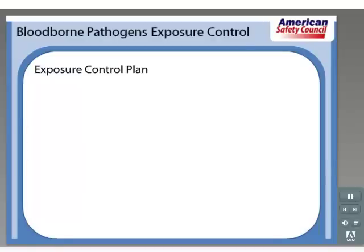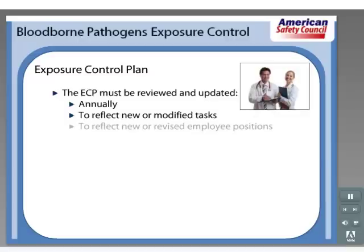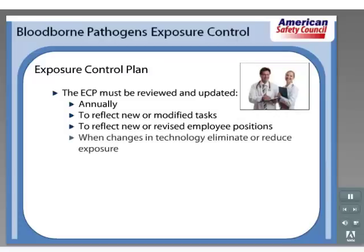The exposure control plan must be reviewed and updated at least annually and whenever necessary to reflect new or modified tasks and procedures which affect occupational exposure, and to reflect new or revised employee positions with occupational exposure. The review and update must also reflect changes in technology that eliminate or reduce exposure to bloodborne pathogens, and document annually the consideration and implementation of appropriate commercially available and effective safer medical devices designed to eliminate or minimize occupational exposure.